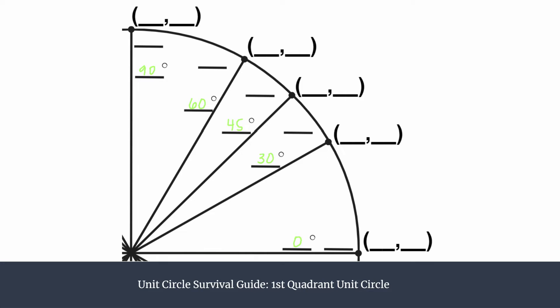When labeling in radians we count zero, pi over six, pi over four, pi over three, and pi over two.